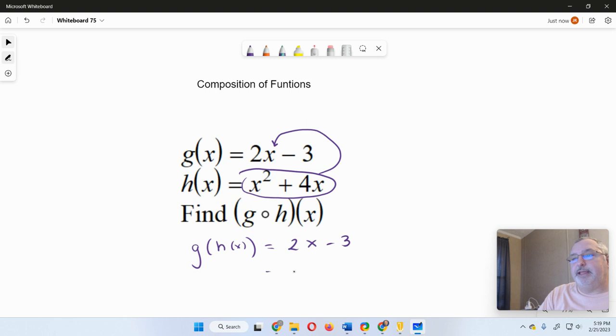I'm going to replace the x with x squared plus 4x. And then it is just a matter of simplifying. I'm going to do distribute property right here. So that gives me 2x squared plus 8x minus 3. And then I look to see if anything combines. In this case, nothing combines. So that is the final composition function, g of h of x.